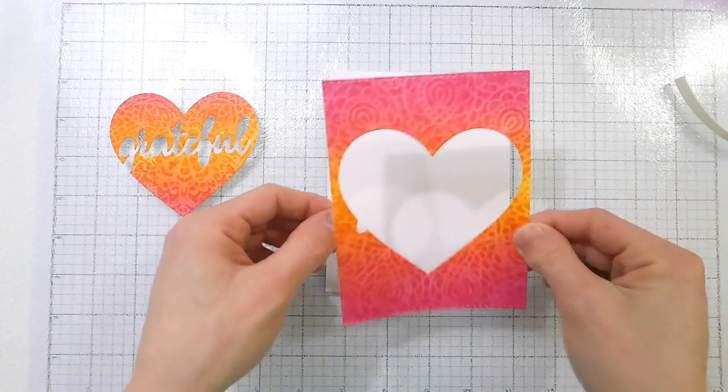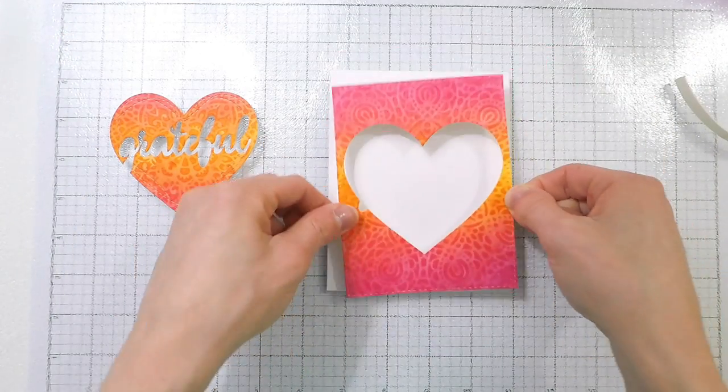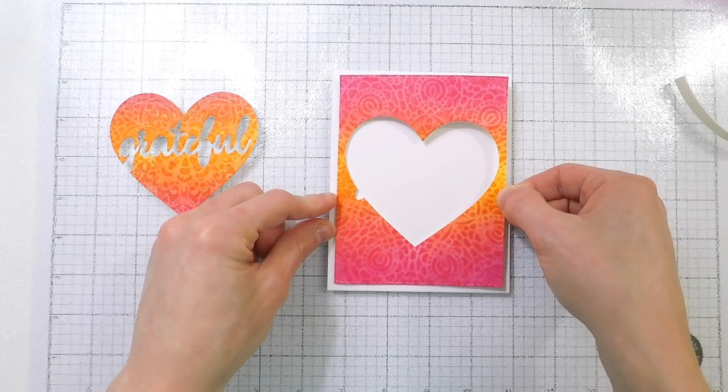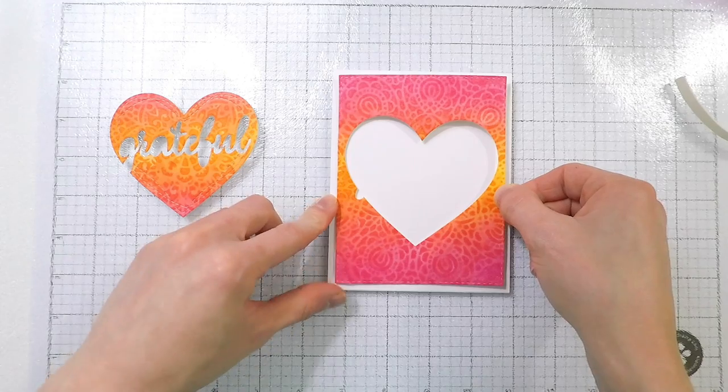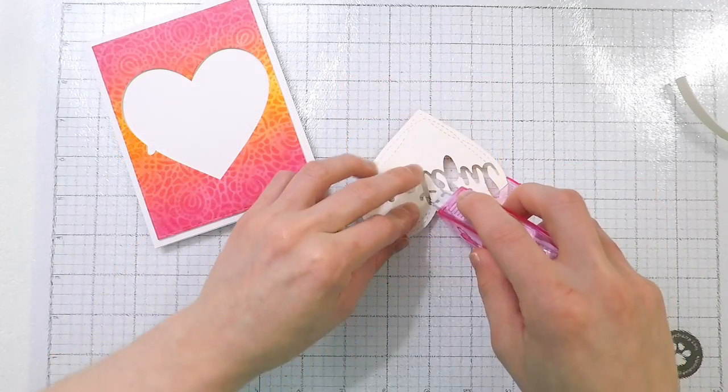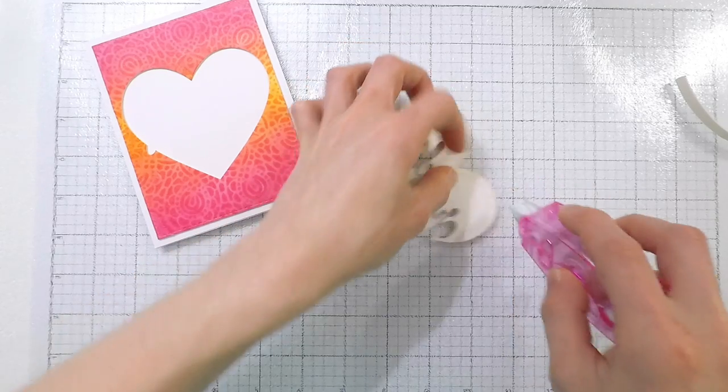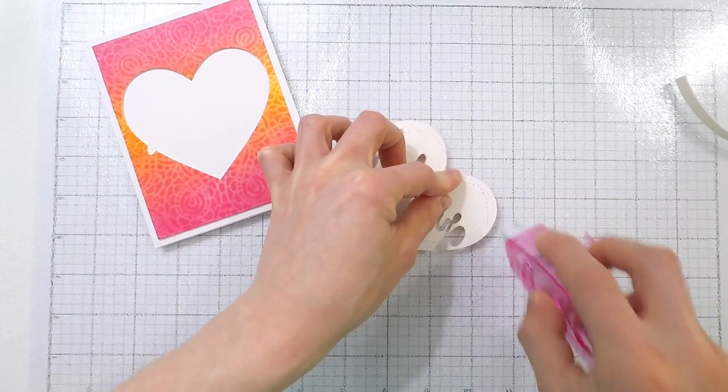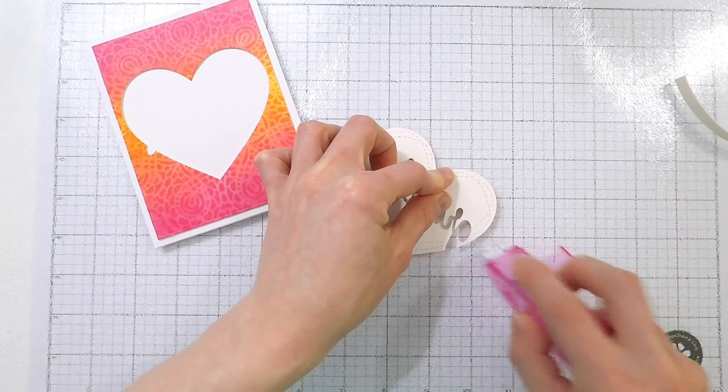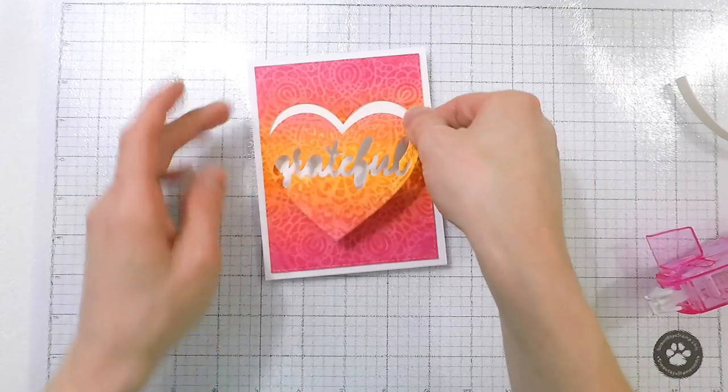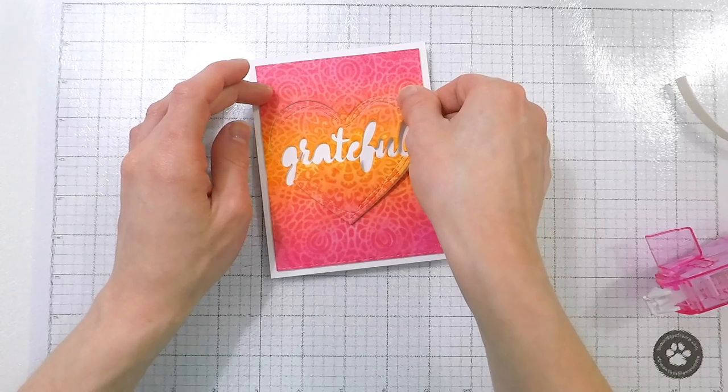I'm going to pop that panel up off of my card using some foam tape. And then I'm going to take the heart and I'm going to add some adhesive on the back side. This is going to lay flush onto the card, whereas the outer panel is going to be popped up. It creates a recessed effect for our inlay die cutting, just adds a little bit of interest. If you don't want to add the foam tape, you could definitely have this entire piece flush onto your card.